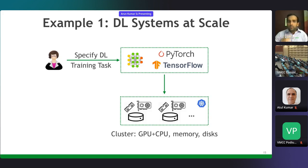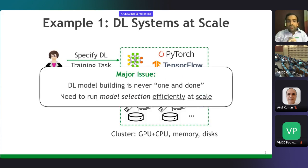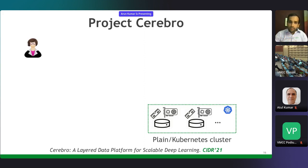When you think of deep learning, how do you build deep learning models? You specify your training task and neural computational graph in PyTorch or TensorFlow, and then run it on a cluster of GPUs, maybe managed with Kubernetes. This is a pretty rosy picture. In reality, there's a lot more that takes place. Model building is never one and done—you need to run model selection, which is the process of tuning hyperparameters, architectures, data representations, inputs, and outputs. This needs to happen efficiently at scale.